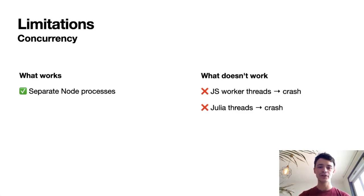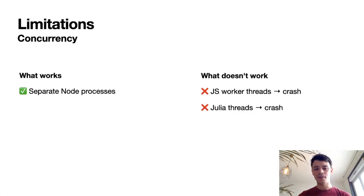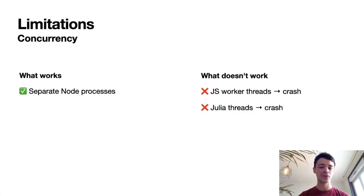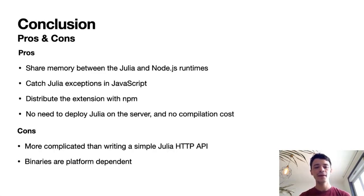One limitation of this approach is concurrency. I didn't manage to run several instances of a Julia algorithm in parallel — using Julia threads causes a crash with a segmentation fault, and the same happens with JavaScript worker threads. It may be possible to make threading work with more research, but if you want multiple instances of your algorithm in parallel, you can run separate Node processes and everything will work as expected.